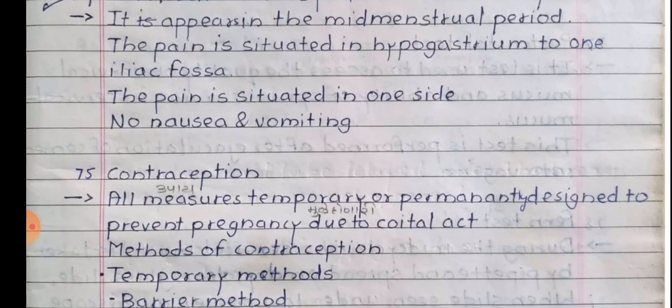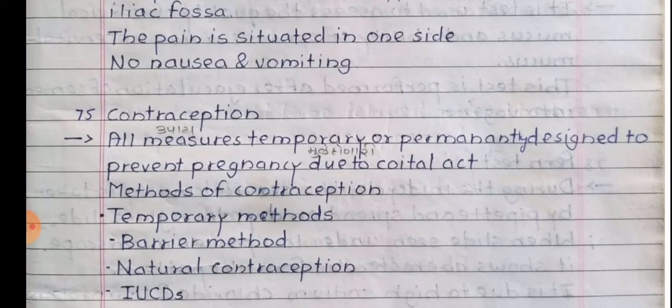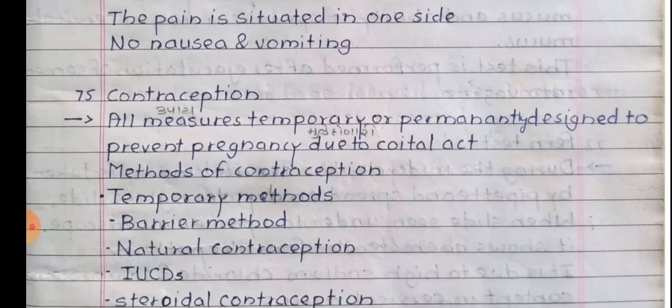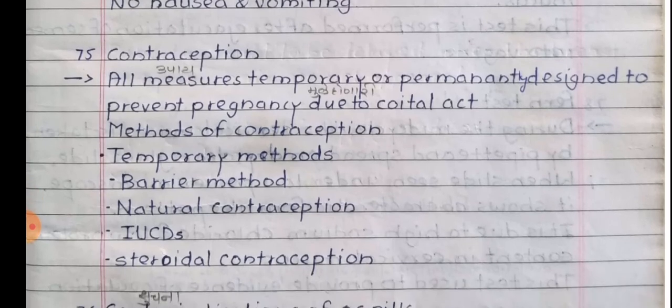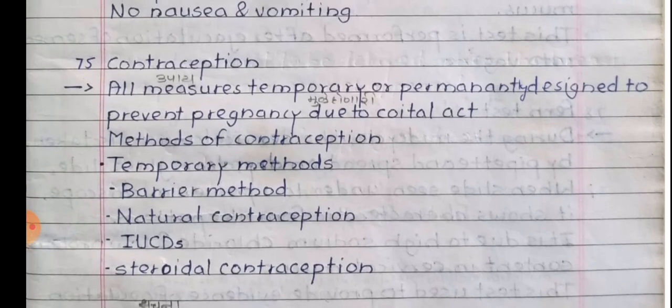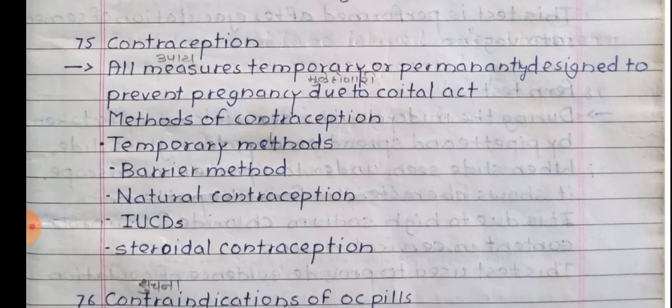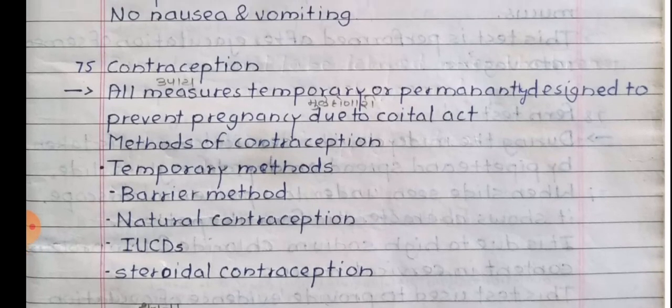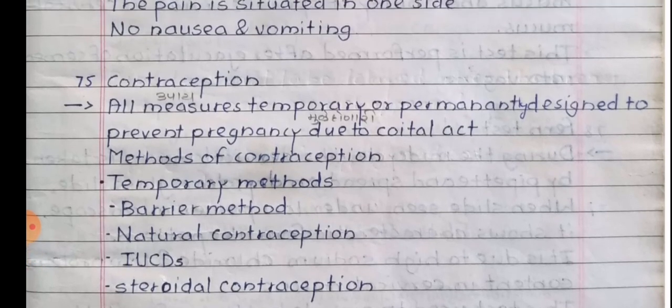Contraception. All measures, temporary or permanent, designed to prevent pregnancy due to coital act. Methods of contraception include temporary methods such as barrier method, natural contraception, IUCDs, and steroidal contraception.